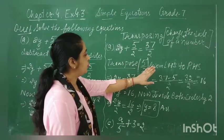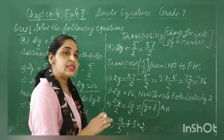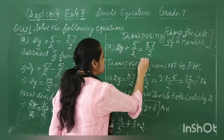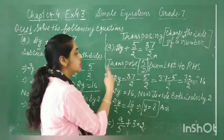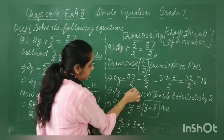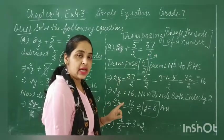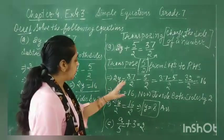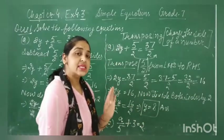Transpose 5 by 2 from the left hand side to the right hand side. Our main motive is to eliminate these constants. When we transpose, there is no need to write the subtraction on both sides — when 5 by 2 moves from the left to the right, its sign changes from plus to minus. So the next step becomes: 2y is equal to 37 by 2 minus 5 by 2, and overall we get 16.